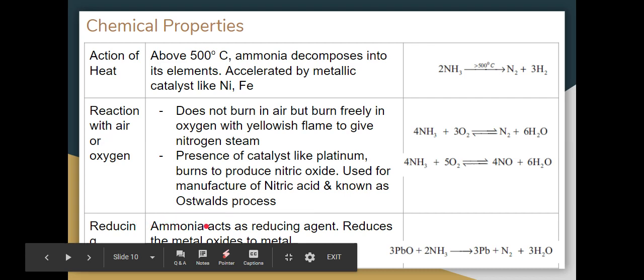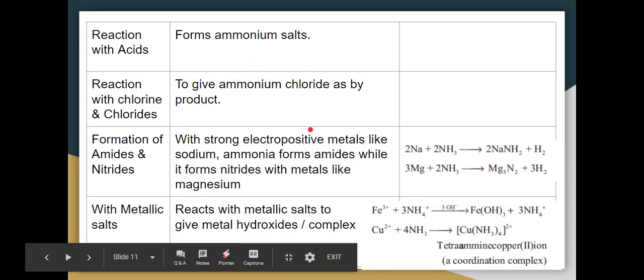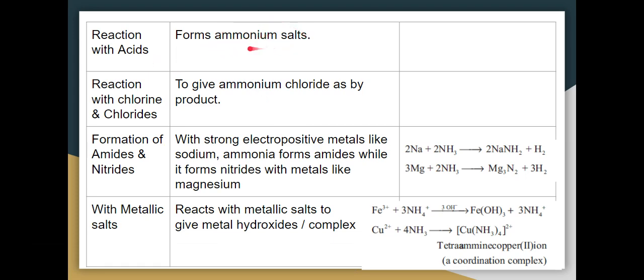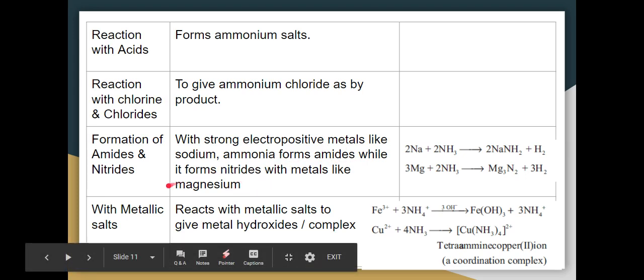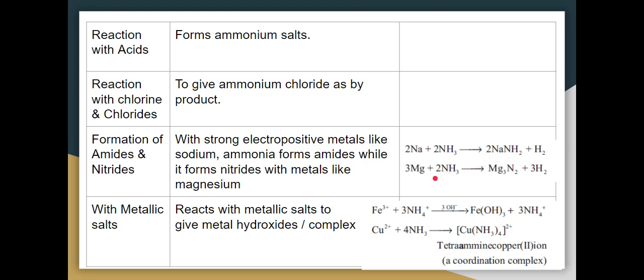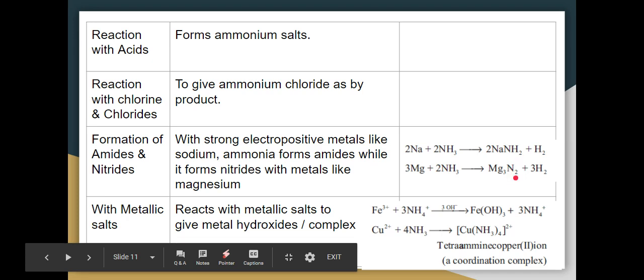In that reaction, we produce nitric oxide. If we use nitric oxide, we use it in nitric acid manufacture. This is called Ostwald process. As a reducing agent, ammonia will react with metal oxides like lead oxide to reduce it to lead. Reaction with acids: ammonia reacts with acids to form ammonium salts. With chlorine, it forms ammonium chloride. With strong electropositive metals like sodium, ammonia forms amides. With magnesium, it forms nitrides. Metallic salts react with ammonia to form metal hydroxides or complex coordination compounds like tetramine copper(II) ion.